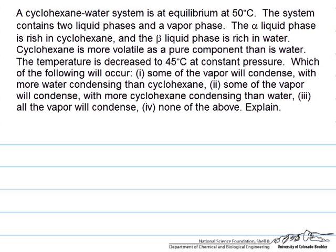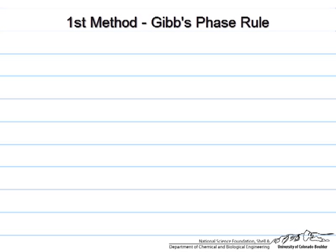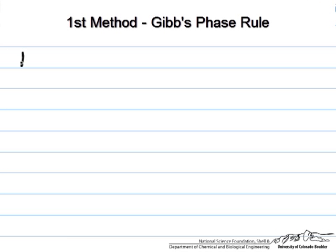We will look at two ways of analyzing this. One is that we can simply apply the Gibbs phase rule. It says that the number of degrees of freedom is equal to 2 plus the number of components minus the number of phases.